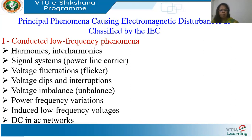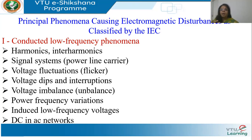Under conducted low-frequency phenomenon, the first issue is harmonics. The lowest frequency in a spectrum is called the fundamental frequency — for power signals it is either 50 Hz or 60 Hz, and in India it is 50 Hz. Harmonics are all integer multiples: the second harmonic is 100 Hz, the third is 150 Hz, the fourth is 200 Hz, and so on. For a harmonic of order h, the frequency is h × 50.